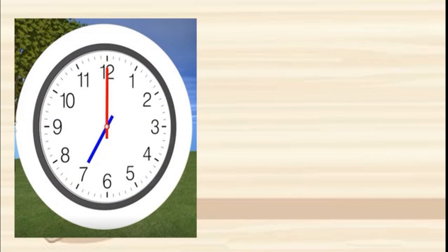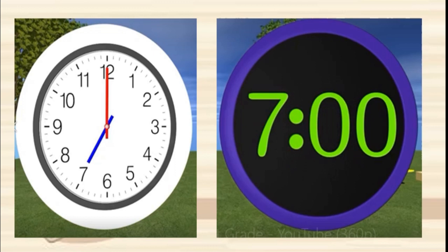Students, you can see here a clock with two hands. One is on 7 — that is the smaller hand — and the longer one is on 12. Please try to read the time. The hour hand is smaller and the minute hand is longer. Yes, you are right — this is 7 o'clock. In digits, we write 7:00.